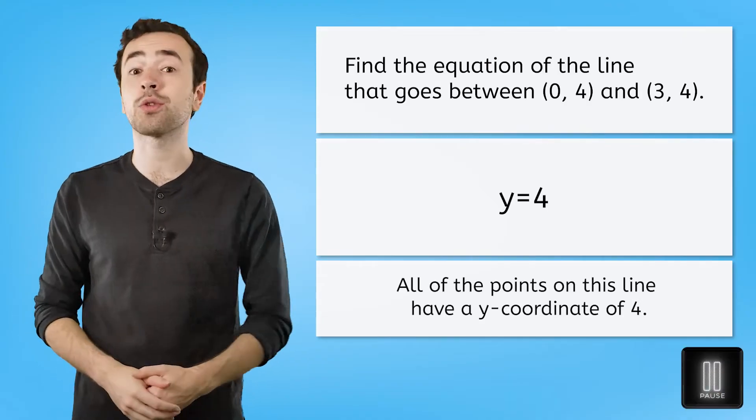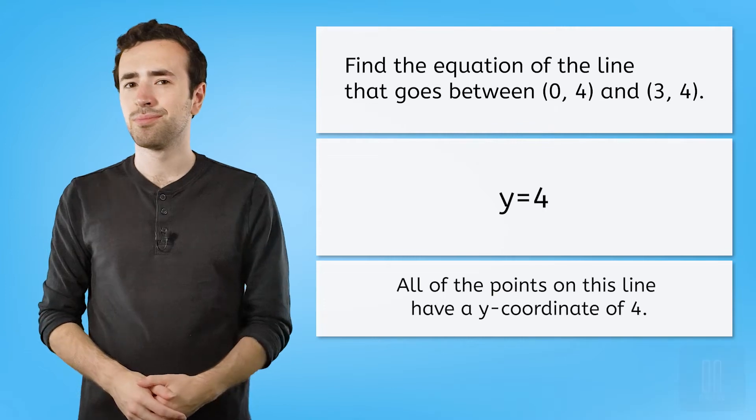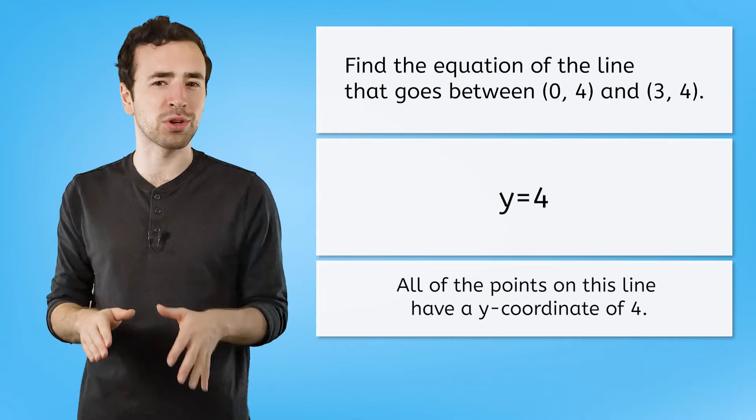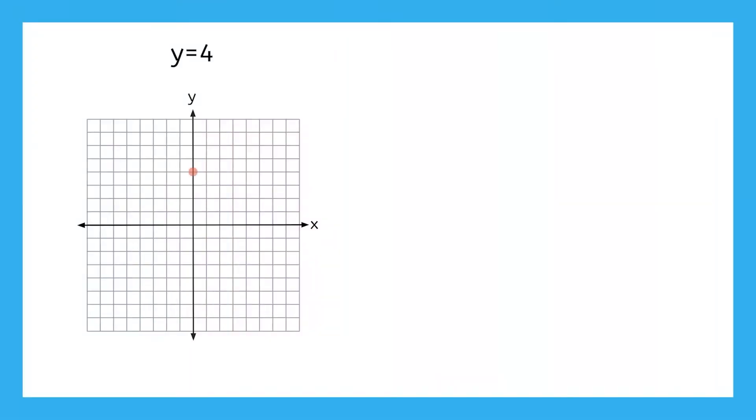So what would this line look like on a graph? Pause the video now and create the graph on your own. Let's take a closer look together. Here is 0 comma 4, and here is 3 comma 4. If I connect them, the line is perfectly flat and horizontal.